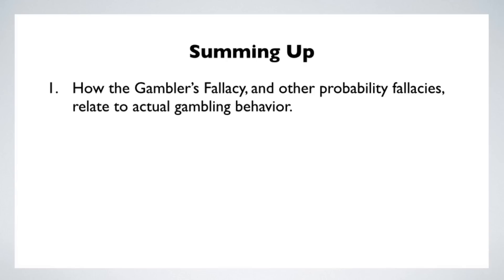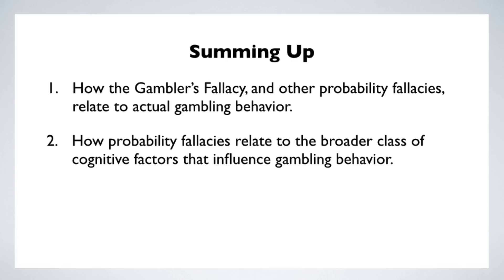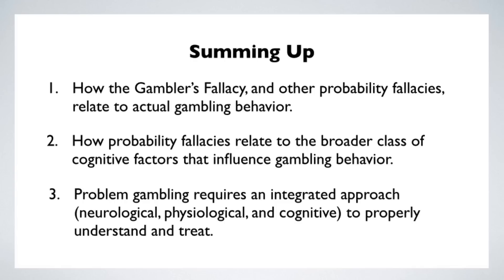Summing up, here's what I wanted to accomplish with this video. I wanted to show how the gambler's fallacy and other fallacies of probabilistic reasoning play a role in explaining actual gambling behavior, and how they relate to the broader class of cognitive factors known to play a role in the psychology of gambling. But I didn't want to suggest that we'll fix these problems simply by educating people about probability theory. Critical thinking about gambling certainly requires that we understand these cognitive distortions, but gambling behavior, like any human behavior, has neurological and physiological as well as cognitive components. We need to understand how these interact to really understand what's going on.